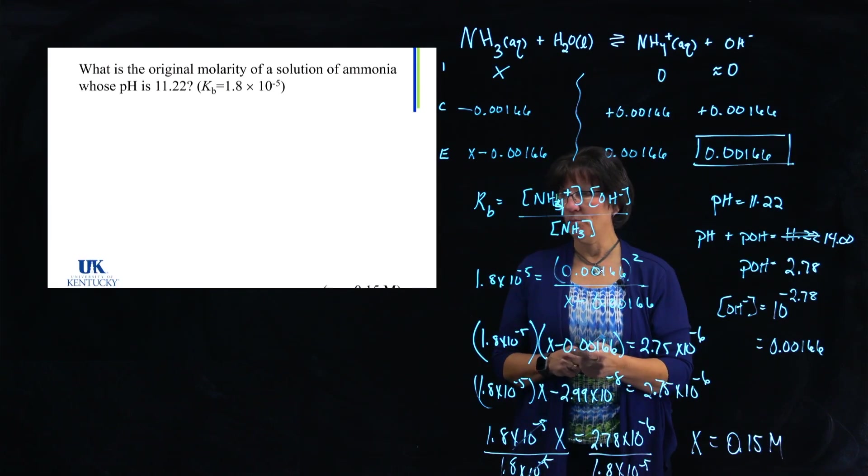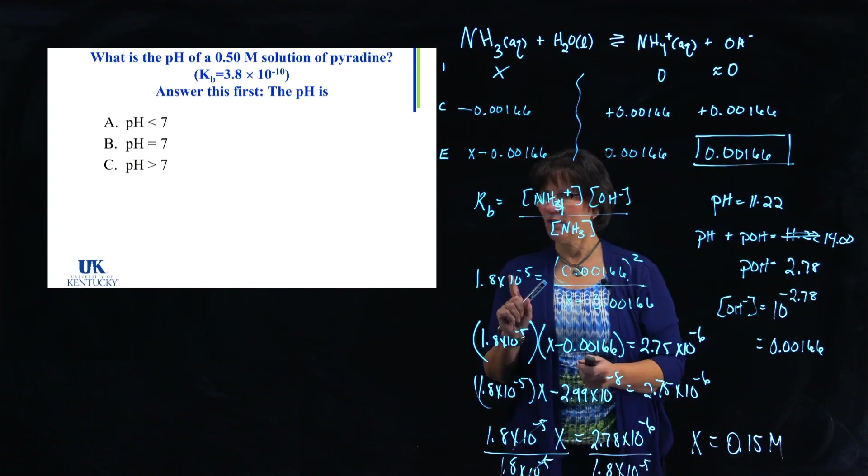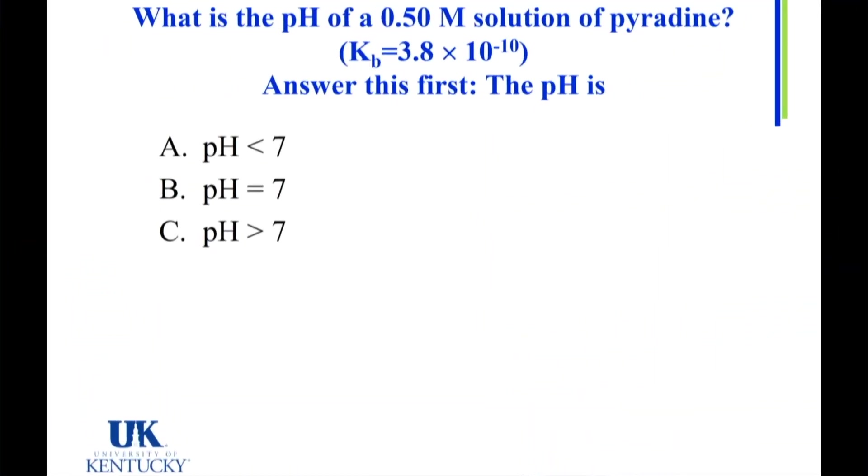So now we've solved that problem. When we come back, we'll have one more to solve. So we're going to determine the pH of a solution. We're given the KB of pyridine. But before we work the problem, I want you to think about whether or not where the pH should fall. Should it be a pH less than 7, equal to 7, or greater than 7? Well, hopefully you picked C, greater than 7. Why would it be greater than 7?